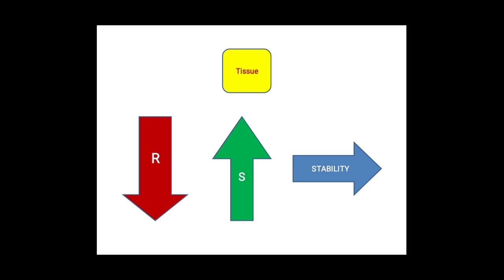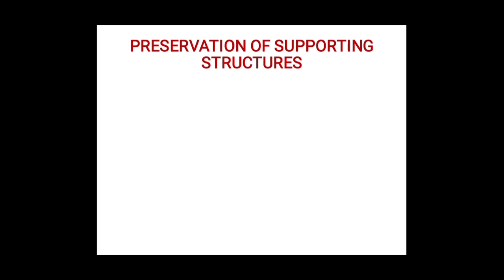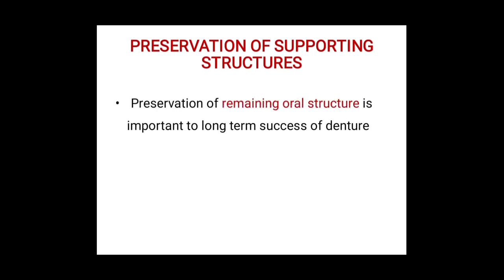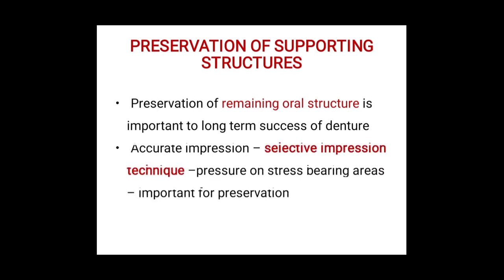Stability is the resistance against horizontal forces. Now let's start with the objectives. Preservation of supporting structures: preservation of remaining oral structures is important to the long-term success of the denture. An accurate impression is what we need, and we achieve this through the selective impression technique.